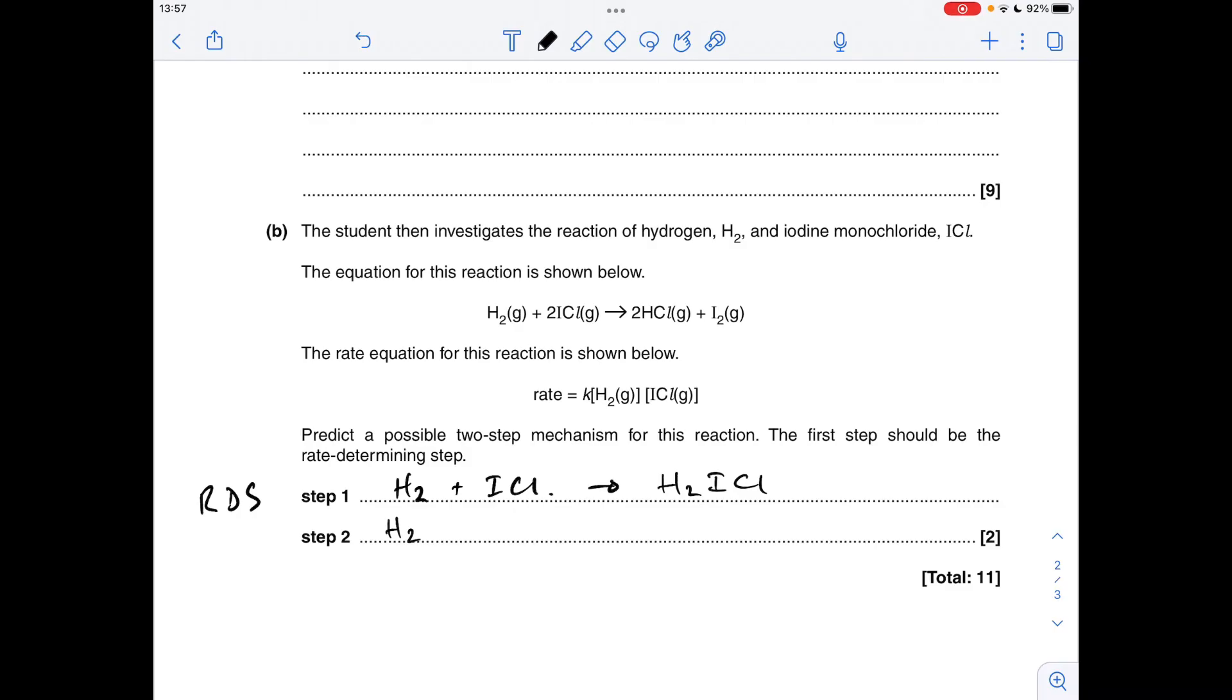What do we need? We'll still need another ICL, so if we react that with ICL, and then from all of those atoms you can actually make two moles of HCl and you can make the I2 that you need. And obviously when you add these two equations together, this thing cancels and you're left with H2 plus two ICL gives two HCL and I2. So that is actually a valid mechanism and it would be credited.